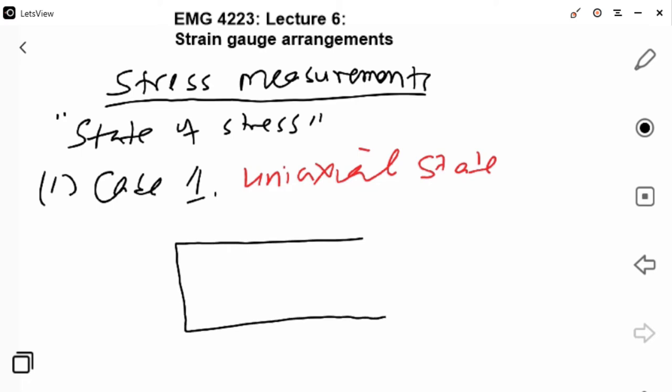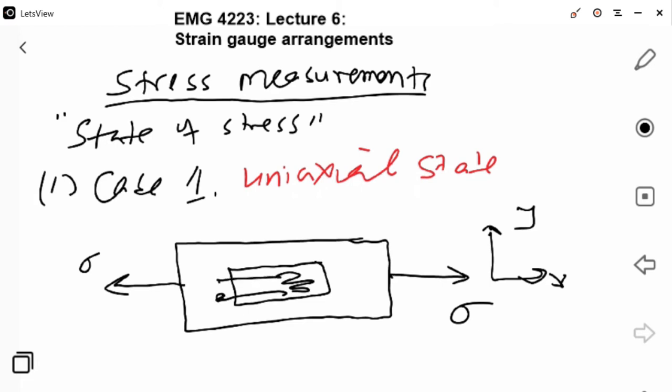If I may use a sketch, what happens is we will have a beam subjected to stresses only in the x direction, and then the strain gauge will be mounted there. So this is the strain gauge. The only stress is sigma_xx, and in this case the strain gauge is positioned along there.